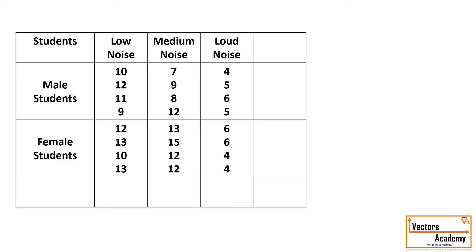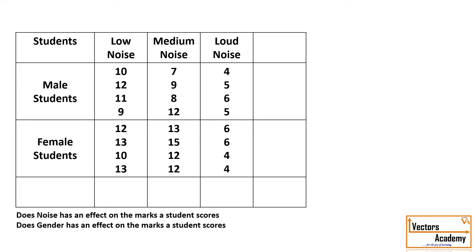In this, we need to study three major things. First, does the noise have an effect on the student marks? Second, does the gender of a student have an effect on the marks? And third, does the gender affect how the students react to the noise? So there are three different categories to be studied: the effect of noise on the marks, the effect of gender on the marks, and the collective effect of gender and noise on the marks.